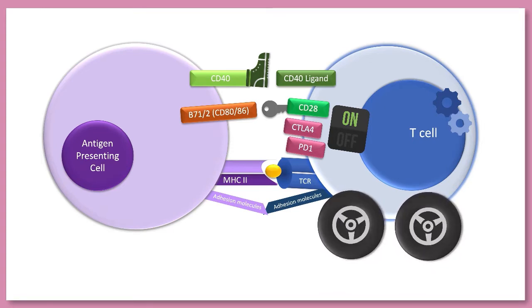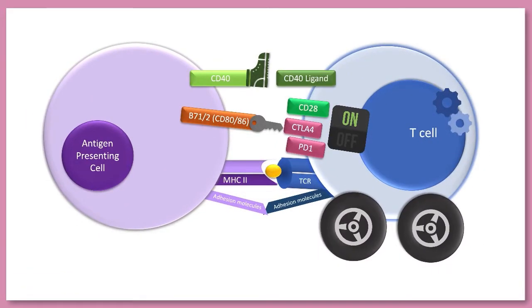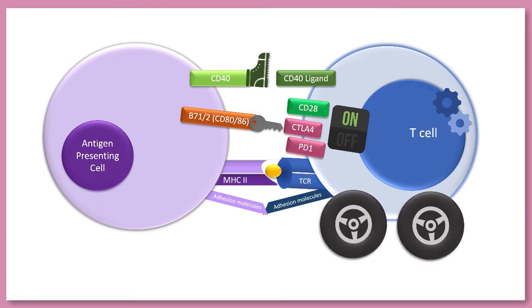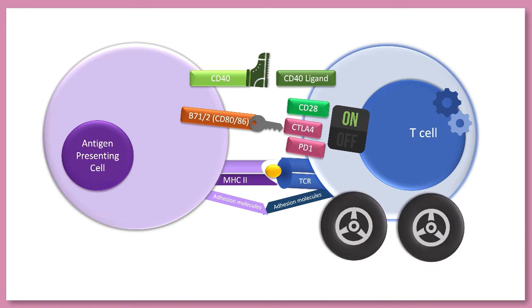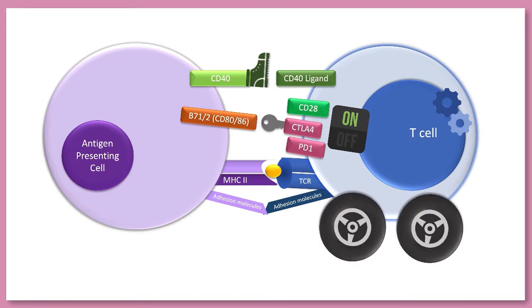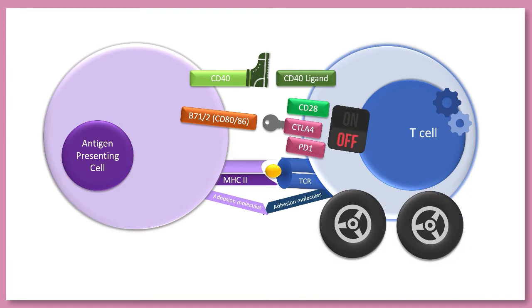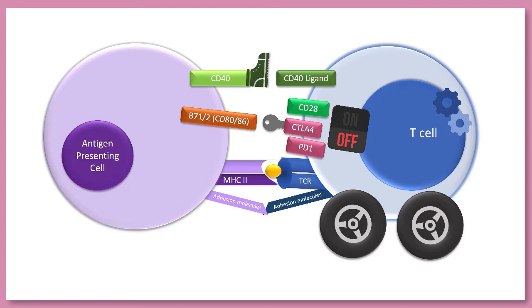But then just like you can turn a key to start a car, you can also turn that same key in the opposite direction to stop the car. And so B7-1 and B7-2, whilst they are indeed the on switch for the T cells when they bind to CD28, they are also the off switch for T cells when they interact with the brake pedals, CTLA4 or PD1. So B7-1 and B7-2 are both the on and off switch for T cells depending on what they are binding to, depending on which buttons they press.